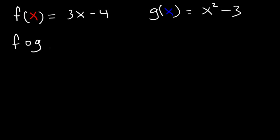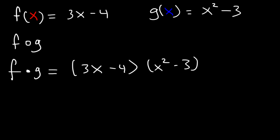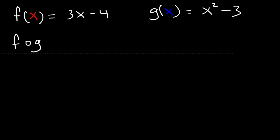What is f of g? Notice that this is different from f times g. If you see a closed circle, it's multiplication: 3x minus 4 times x squared minus 3. But if you see an open circle, it means it's a composite function. One function is inside of another.